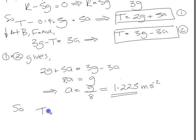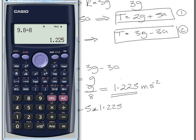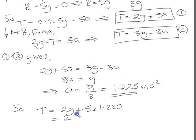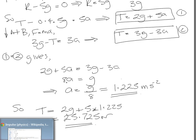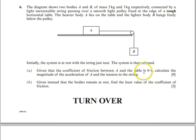So, t will equal 2g plus 5a. I'll use that one. 2g plus 5 times a, which is 1.225. So let's work out the tension then. 2 times 9.8 plus 5 times 1.225. And we get 25.725 newtons. Let's just flip back to the question, see what it asks us. It said, given that the coefficient of friction between a and b in the table is 0.4, calculate the magnitude of the acceleration of a and the tension in the string.